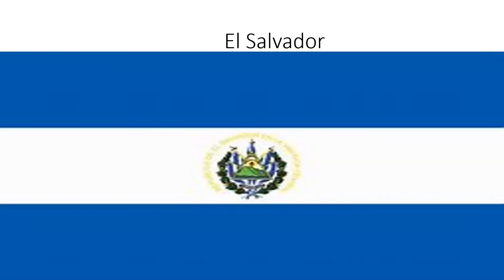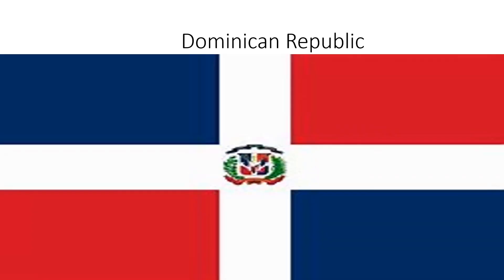El Salvador: blue, white, and blue above each other, and there's a castle in the middle that has a yellow circle around it. Dominican Republic: two blue squares in the corners and two red squares in the corners, and there is a white cross in the middle with something in the center of the cross.